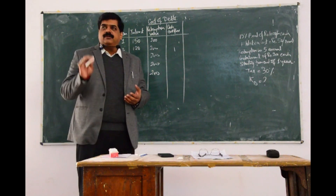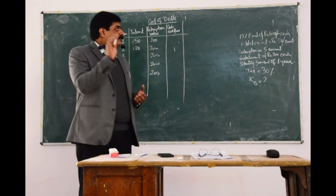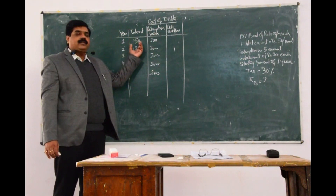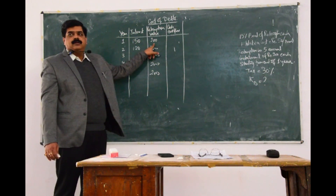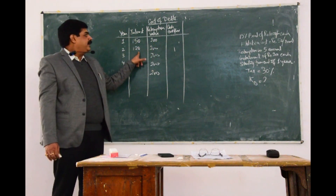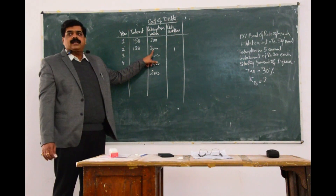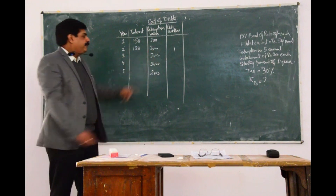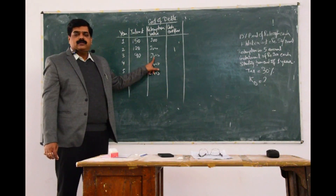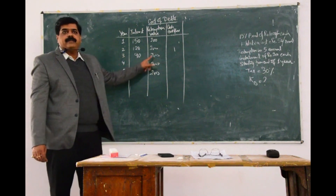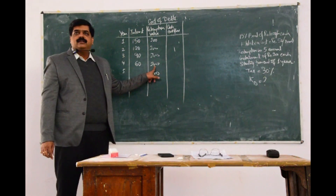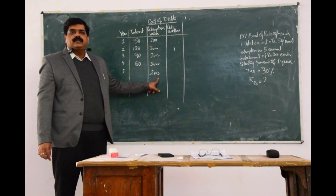In year 1, the face value is ₹1000, so 15% of ₹1000 = ₹150. After paying ₹200 redemption, the remaining amount is ₹800. Year 2: 15% of ₹800 = ₹120. After another ₹200 redemption, remaining is ₹600. Year 3: 15% of ₹600 = ₹90. After ₹200 redemption, remaining is ₹400. Year 4: 15% of ₹400 = ₹60. After ₹200 redemption, remaining is ₹200. Year 5: 15% of ₹200 = ₹30. So the interest series is 150, 120, 90, 60, 30.